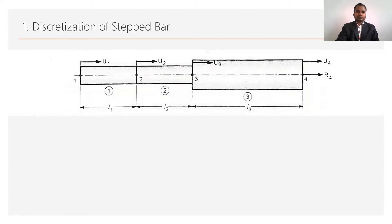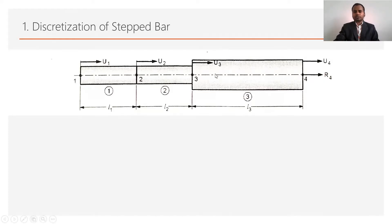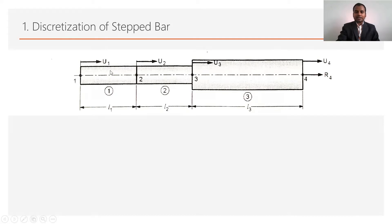In this stepped bar, first of all we discretize the body into a number of elements. For the division of the body into elements, there are some conditions. The first condition is to divide the body from their cross sections — as shown in the figure, there are two cross sections in the body, so this body can be divided into two parts. The second condition is to check where the force is applied in the body. In this numerical, the force is applied at the center of the first cross section, so it is necessary to divide that cross section at the force location as well.